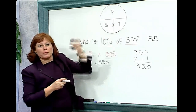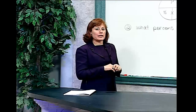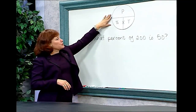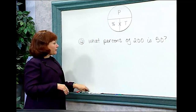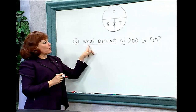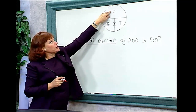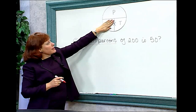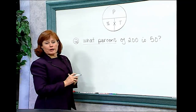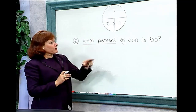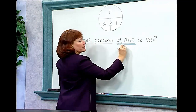Let's do another problem using the percent circle. In this problem we're asking for different information: what percent of 200 is 50? It's immediately identified that percent is the thing I'm looking for. In the percent circle, I'm going to cover up the percent sign, and I see that I need to take the part divided by the total. A helpful hint: when you see the word 'of,' that will help you identify the total — so 'of 200' means 200 is the total.